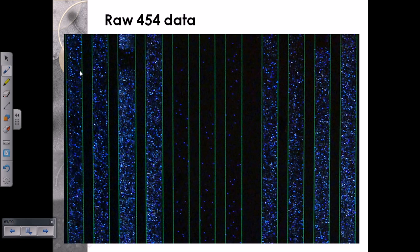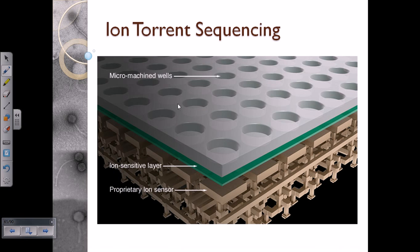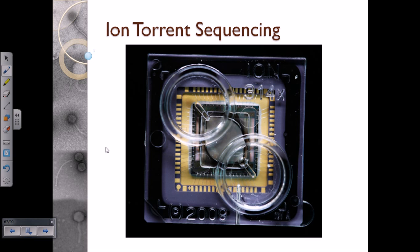This is an actual view of how the data looks for the 454 machine. This shows the ion torrent sequencing wells — the micro-machine wells where the beads are placed and the ion sensors detect the signals. That's how the process of next generation sequencing works.